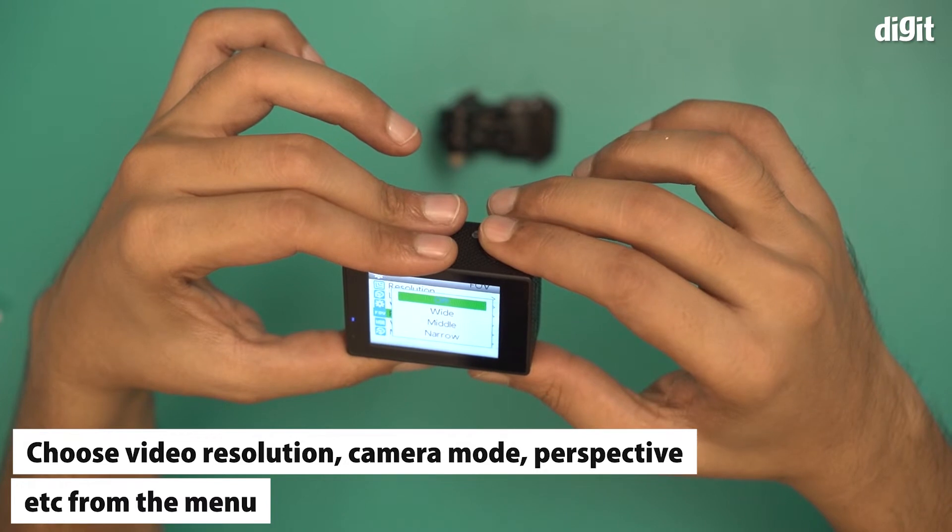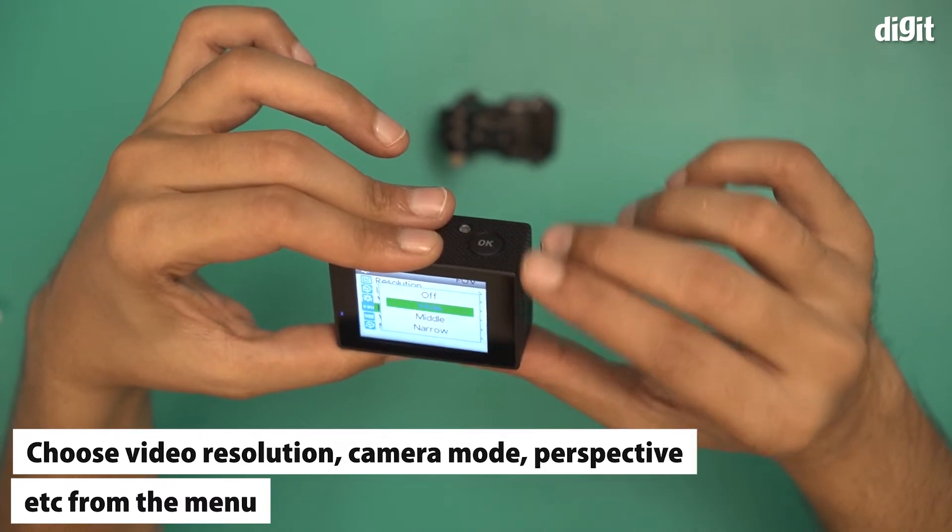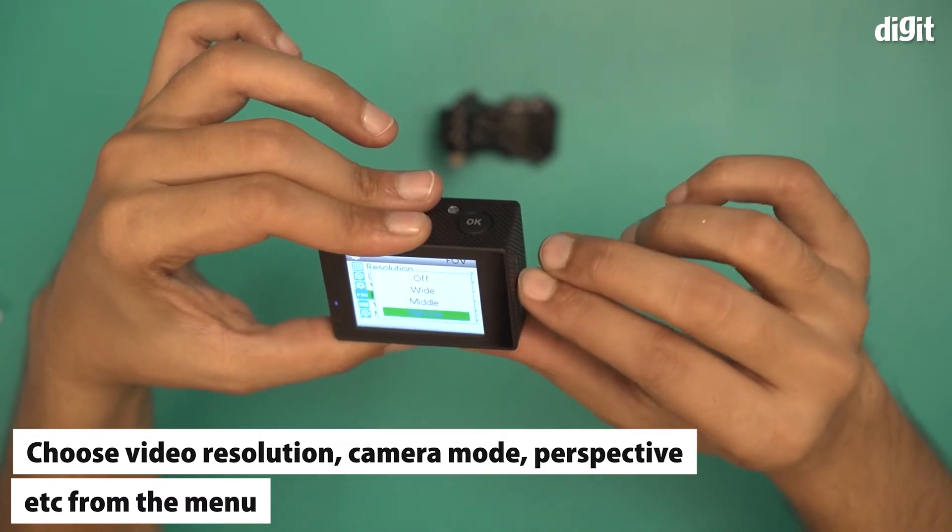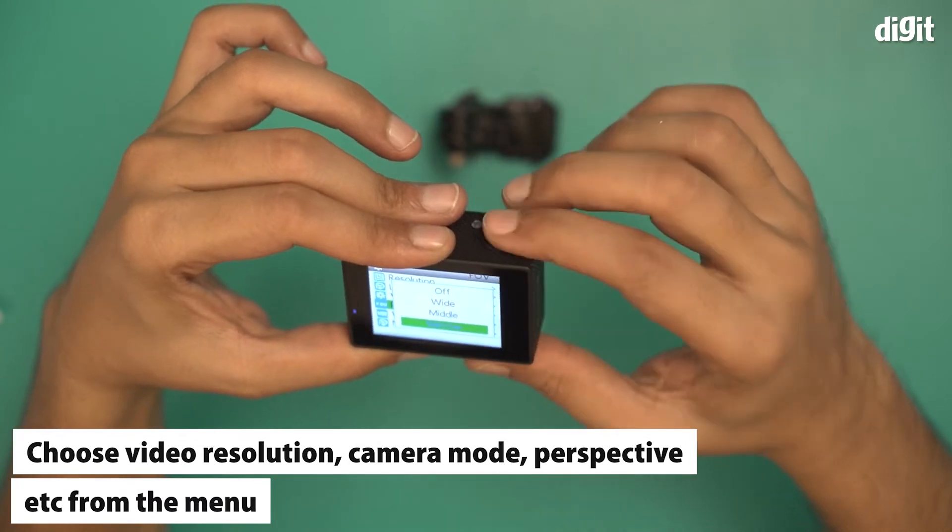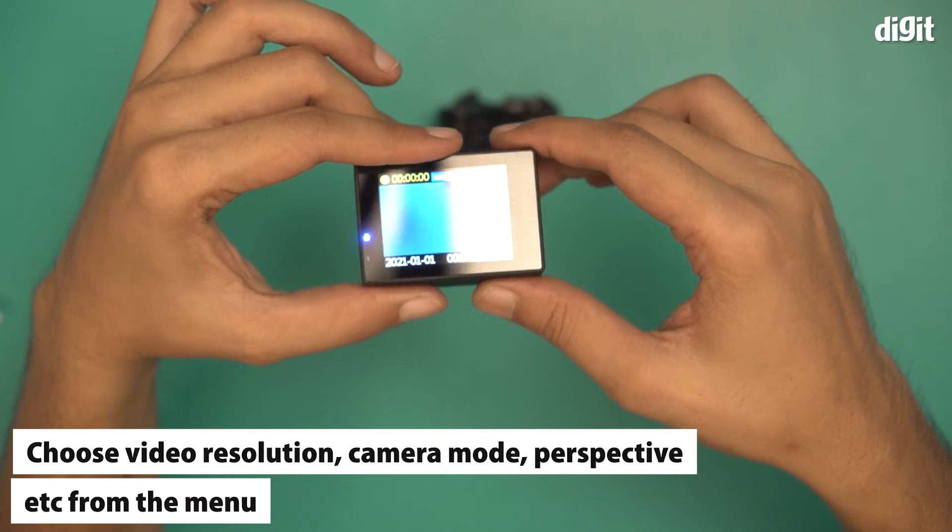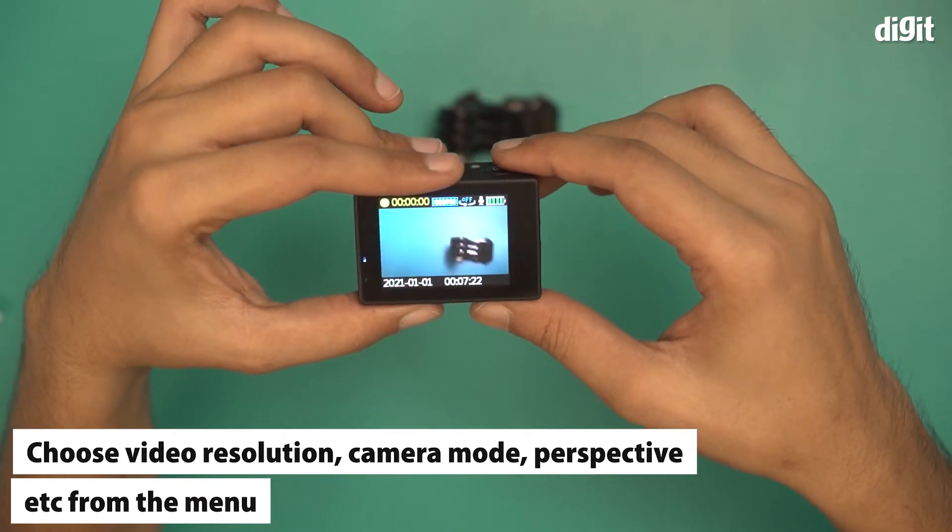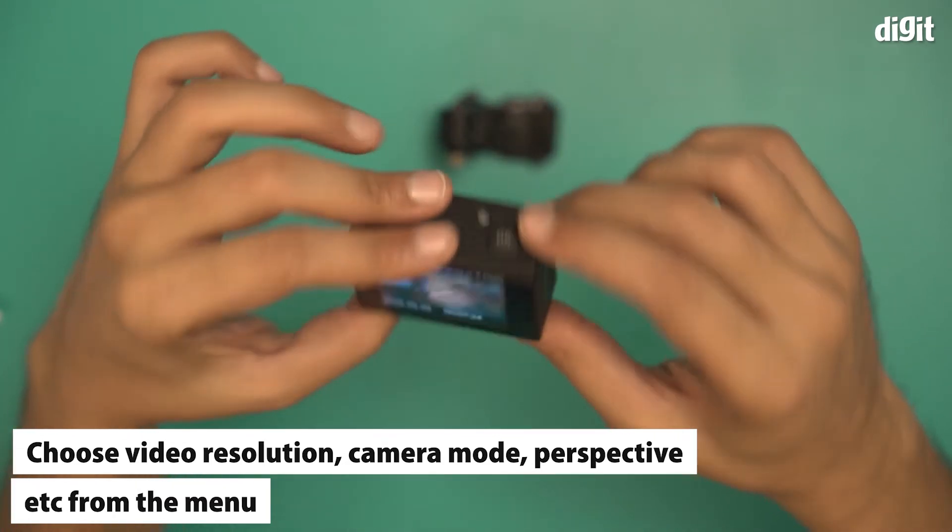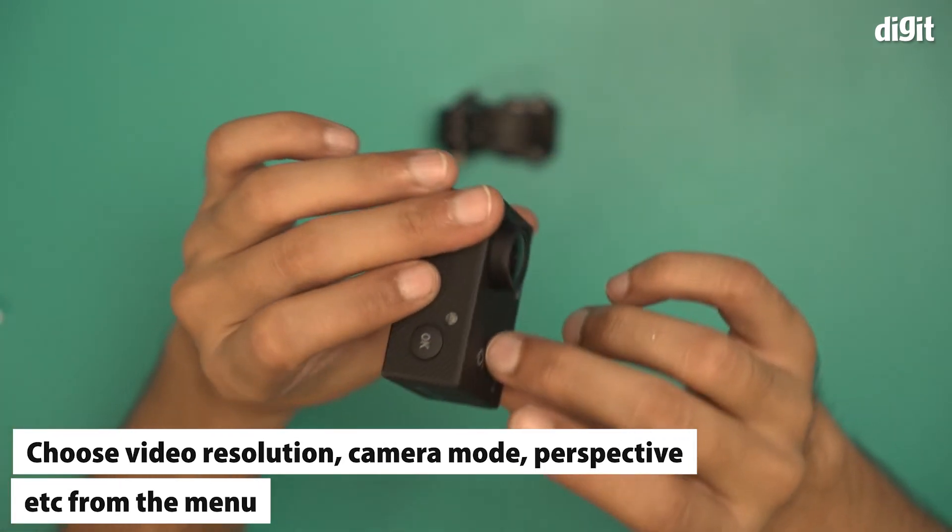There's a field of view option here as well. You have off, wide, middle, and narrow. Let's see what these look like. If I click on narrow and go back to the camera, you can see this is a very narrow perspective that it's showing right now.